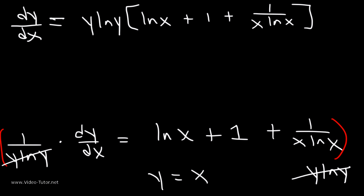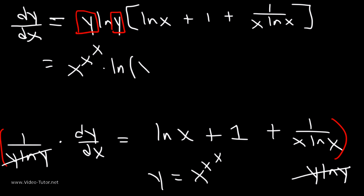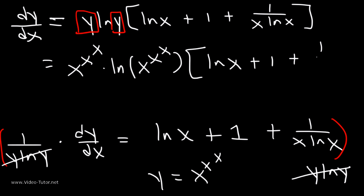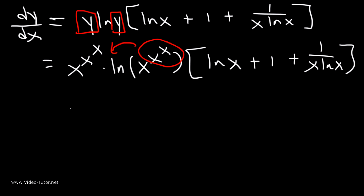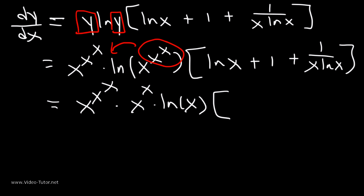We said that y is equal to x raised to the x raised to the x, so we can replace y with that. What we now have is x^(x^x) times ln(x^(x^x)), since that's what y is equal to, times ln(x) + 1 + 1/(x·ln(x)). We can take this exponent x^x and move it to the front, so this becomes x^(x^x) times x^x times ln(x) times all the stuff inside the brackets.